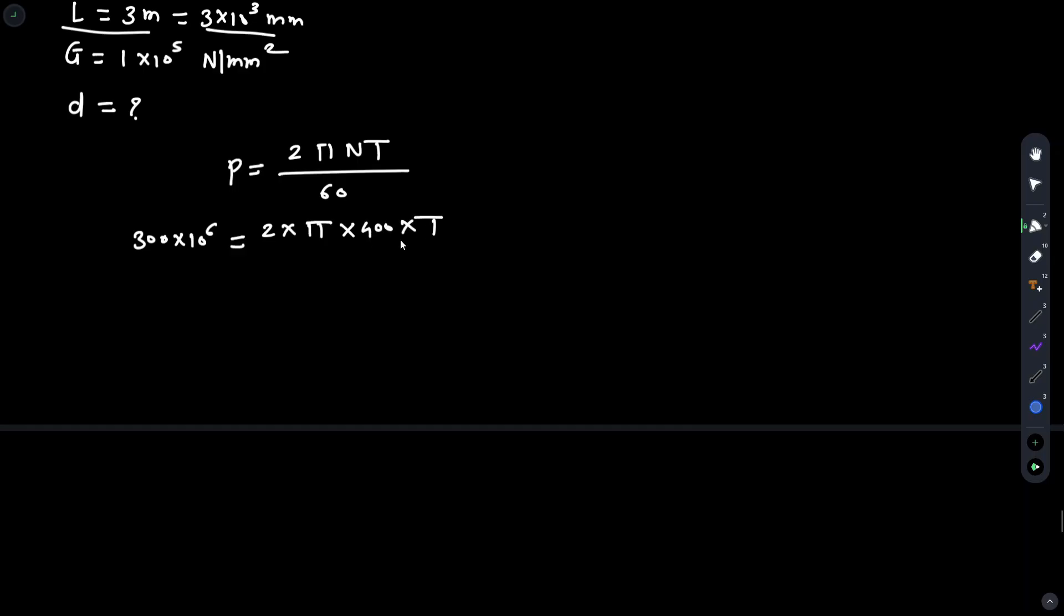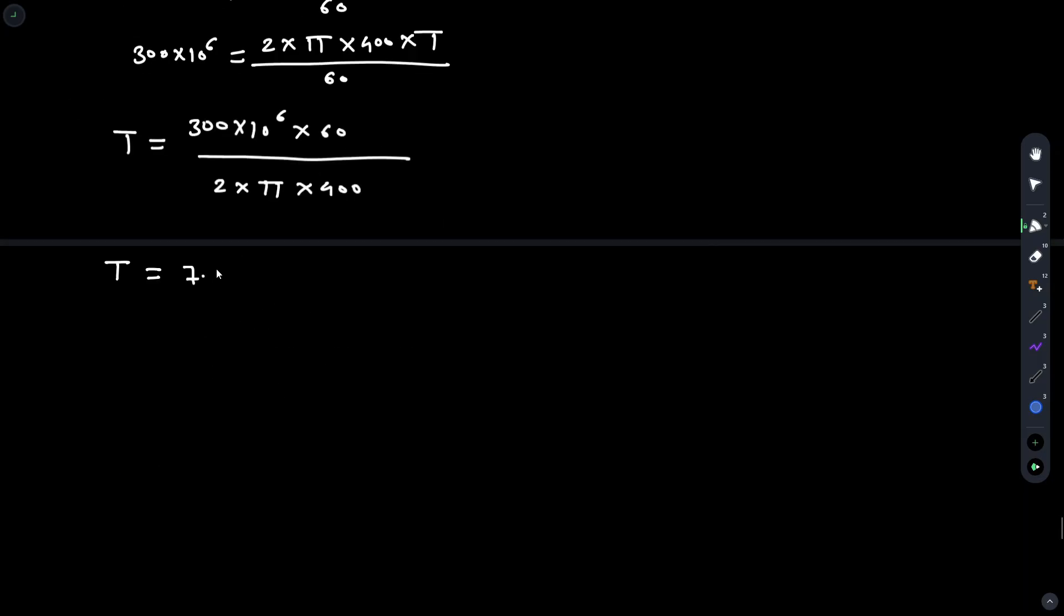N is 400 multiplied by T. So T equals 300 into 10 raised to 6 multiplied by 60 upon 2 multiplied by pi multiplied by 400. Therefore T equals 7.161 into 10 raised to 6 N millimeter.